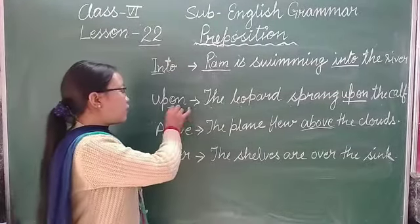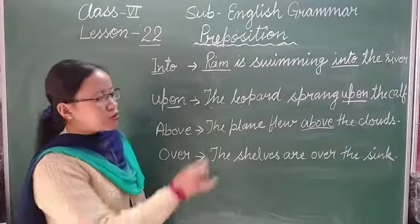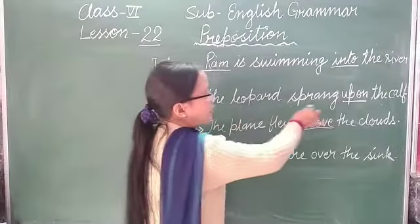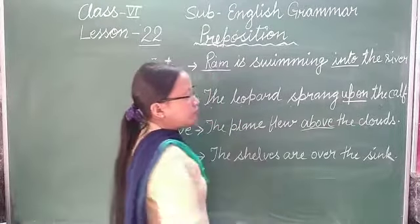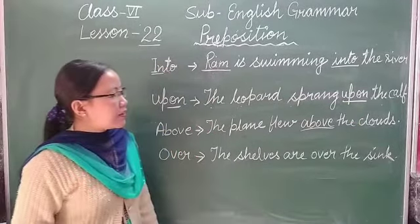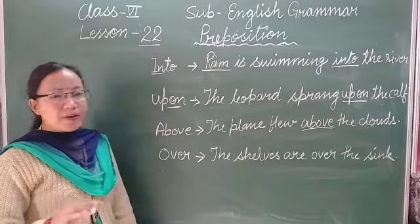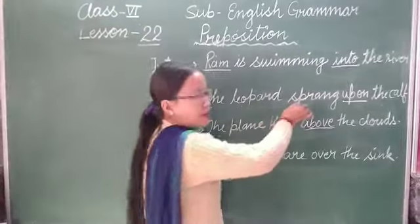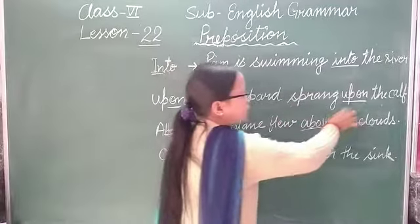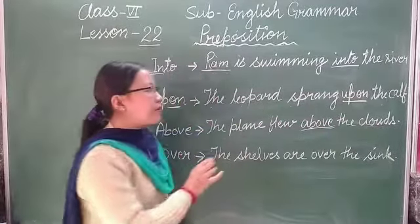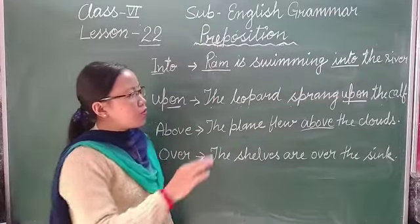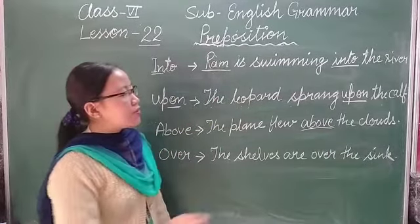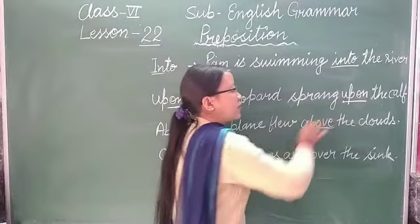Next is 'upon', which is similar to 'into'. Example: 'The leopard sprang upon the calf.' Here the leopard is in motion — it is jumping/pouncing — so we use 'upon' because the subject is in motion.